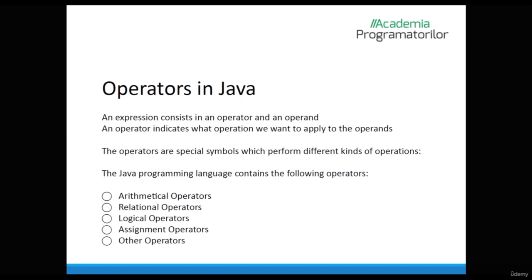Hello! In programming, operators can be of several types. In the last video, we used arithmetic operators. An expression consists of an operator and an operand. An operator indicates what operation we want to apply to the operands — they are special symbols which perform different kinds of operations. The Java programming language consists of the following operators: Arithmetical, Relational, Logical, Assignment and other operators.